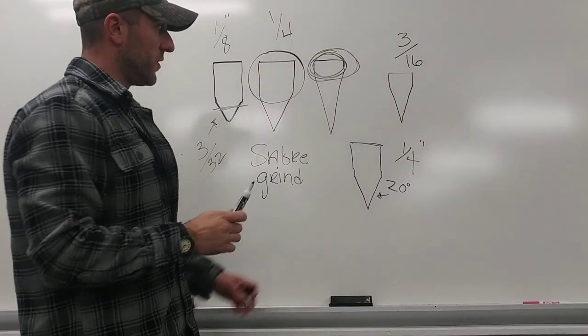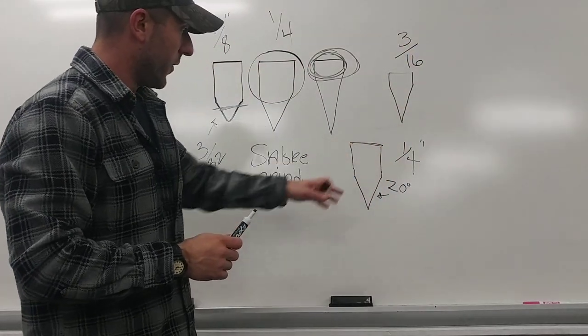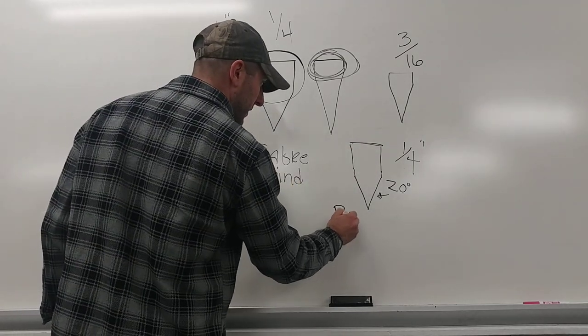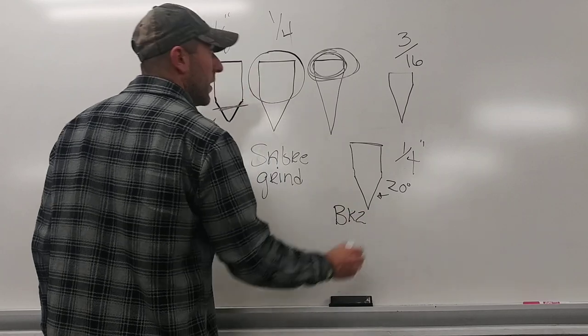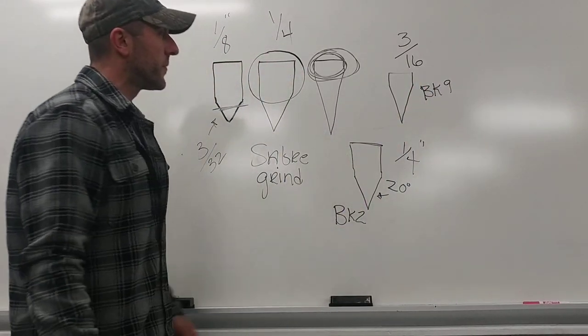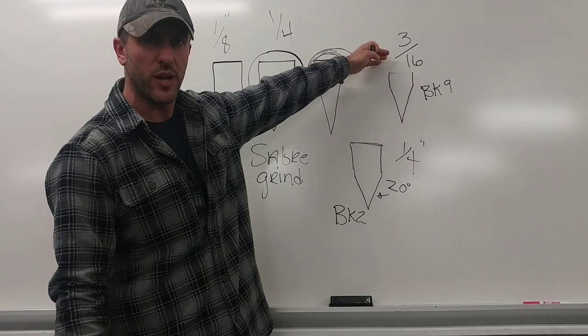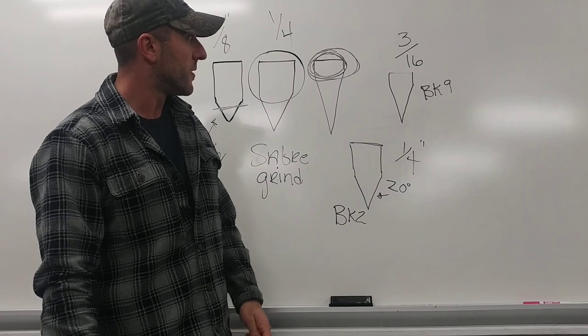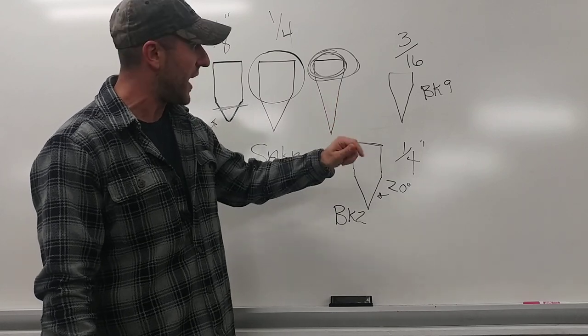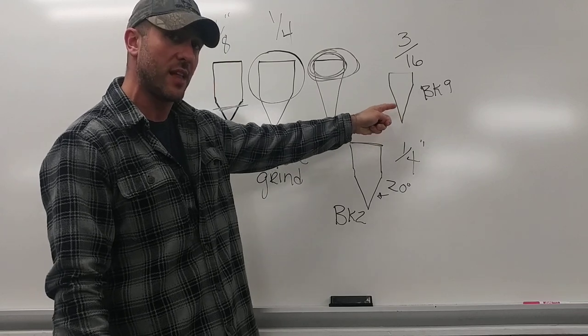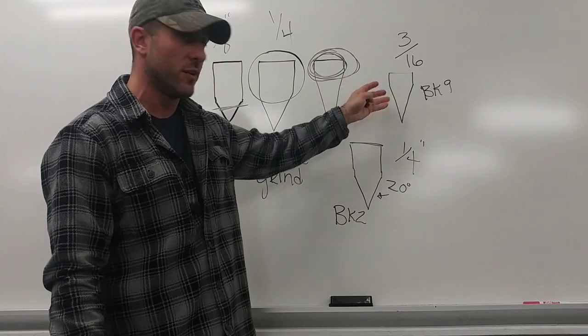The BK2 being a quarter inch, the BK9 is 3/16. So you're going to gain different things depending—obviously we have a tank of a knife, the BK2, right? And here we have the BK9, still a tank of a knife, but as you see, we have a thinner stock up top. We have a wider blade profile, so we can continue this nice slope. We have a knife that slices well too, and it still splits wood.